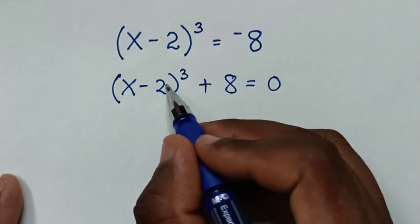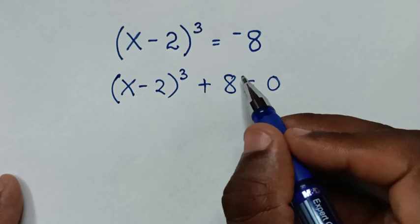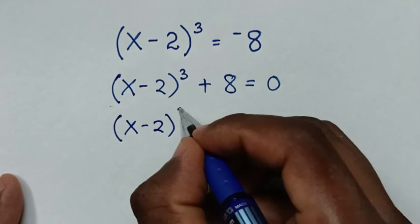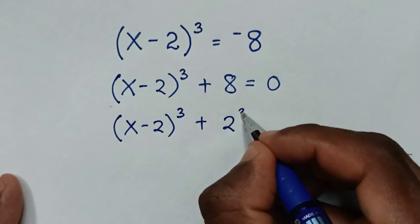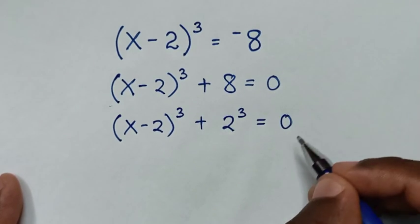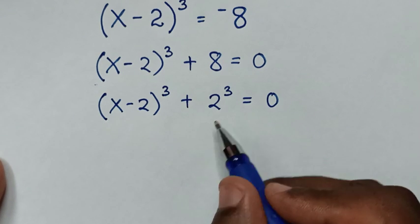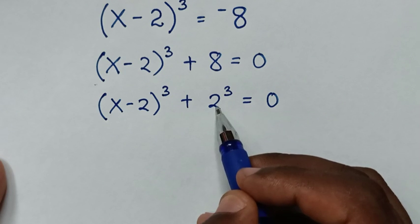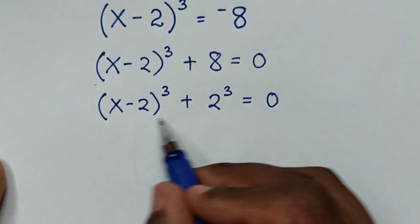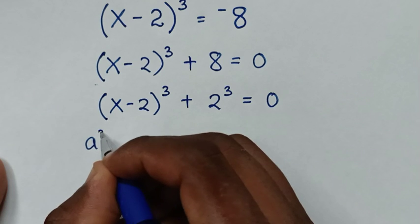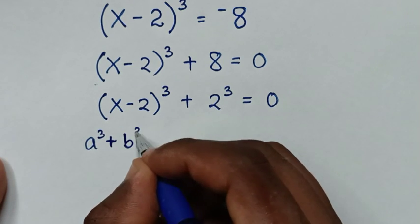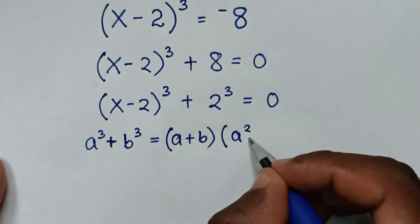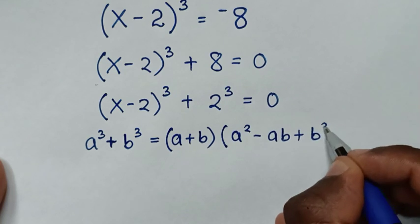Then, because here we have this base with power 3, 8 is the same as 2³. So our equation will be (x - 2)³ + 2³ = 0. The left side is in the form of a³ + b³, so we'll apply the rule: a³ + b³ = (a + b)(a² - ab + b²).